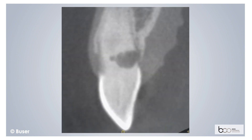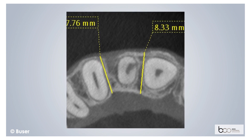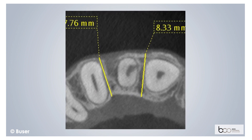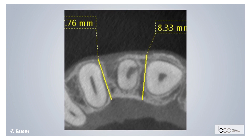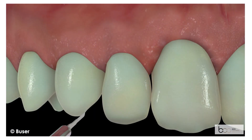The coronal cut shows the bone lesion distally to the root and a sufficient crest width of more than 7 mm.